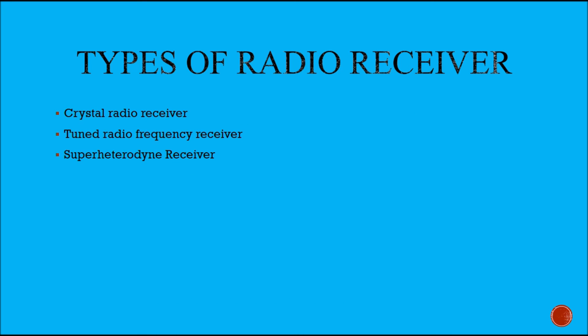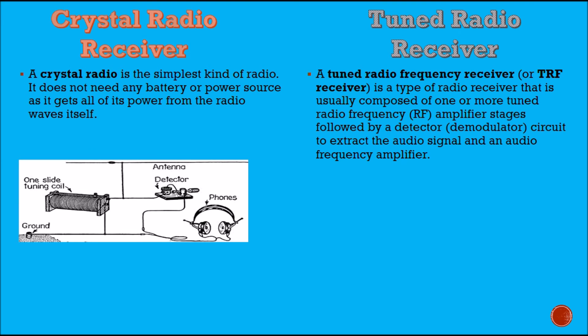The types of radio receivers are the crystal radio receiver, the tuned radio frequency receiver, and the superheterodyne receiver. The most basic radio is the crystal radio, which is the simplest kind of radio. It does not need any battery or power source as it gets all its power from the radio waves itself.